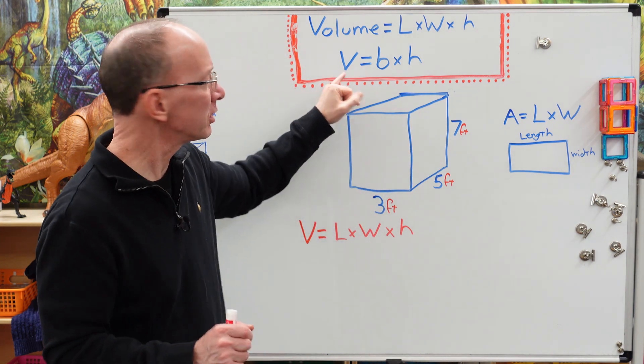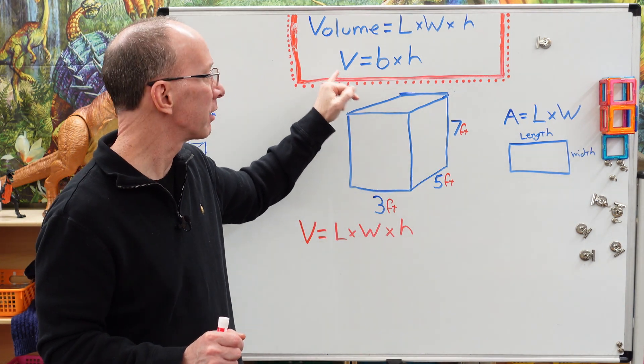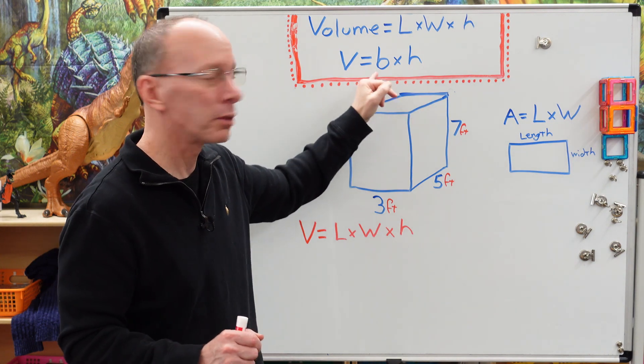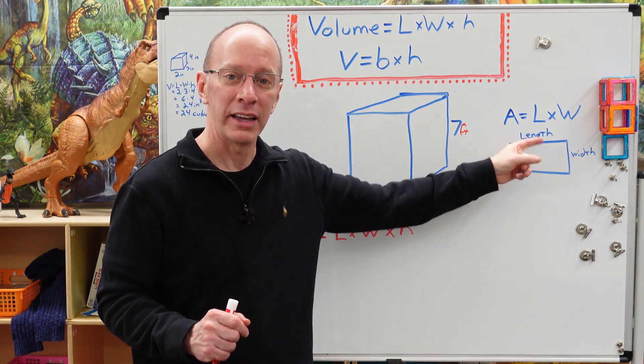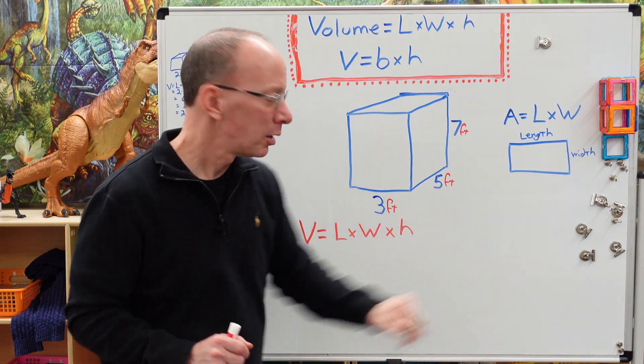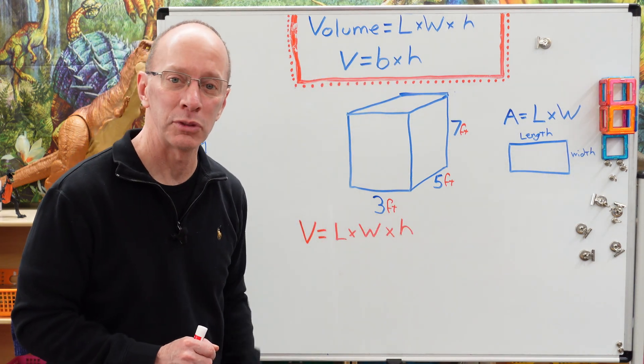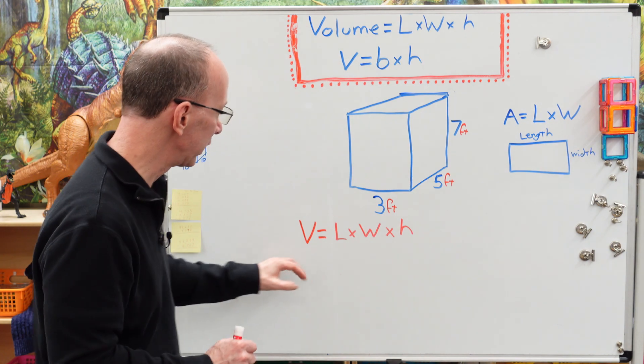And so for this little formula here, you could take volume equals base times height. So for the B, you could use that for the area of a rectangle. But right now, I have this formula right here, volume equals length times width times height. So let's get right into it here.